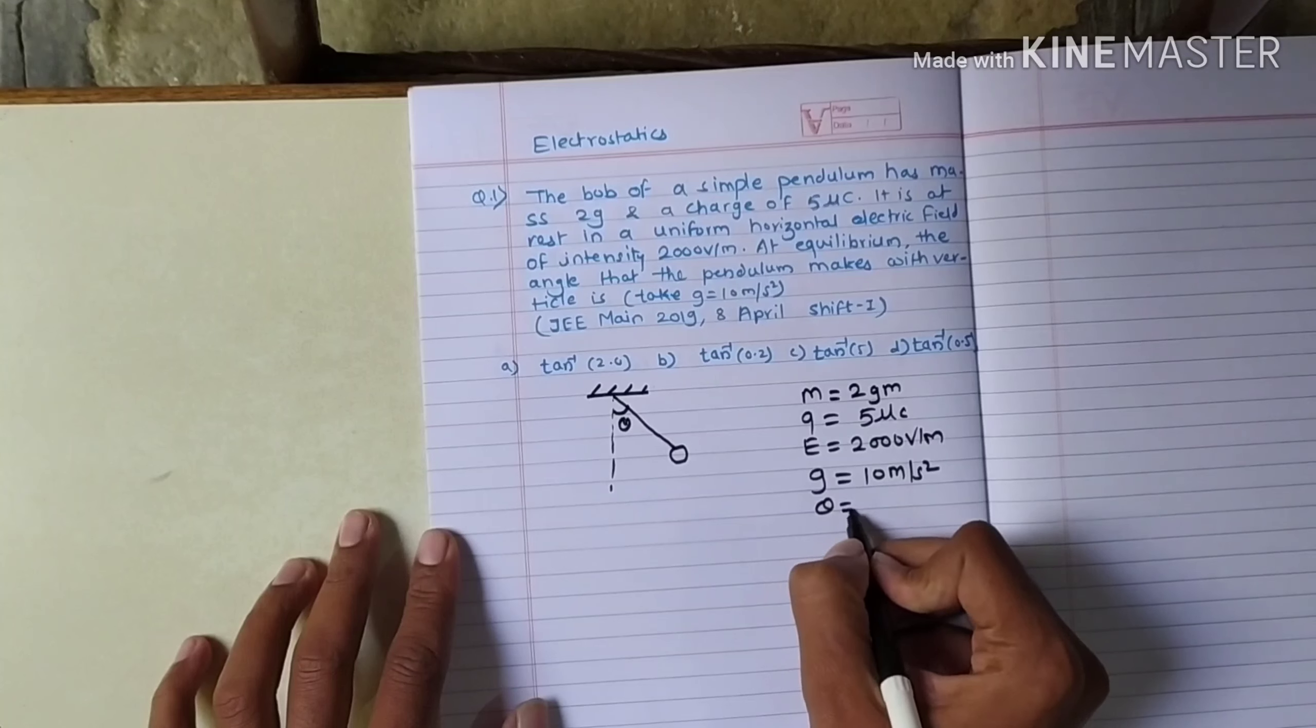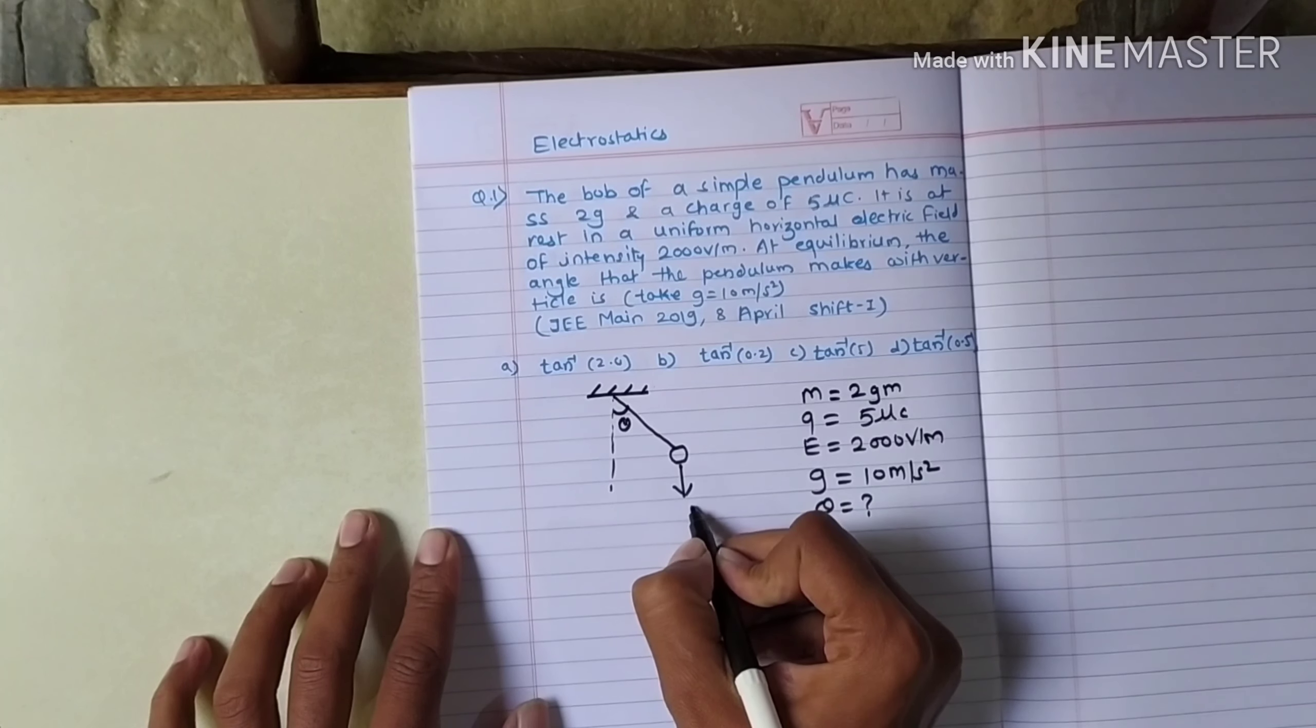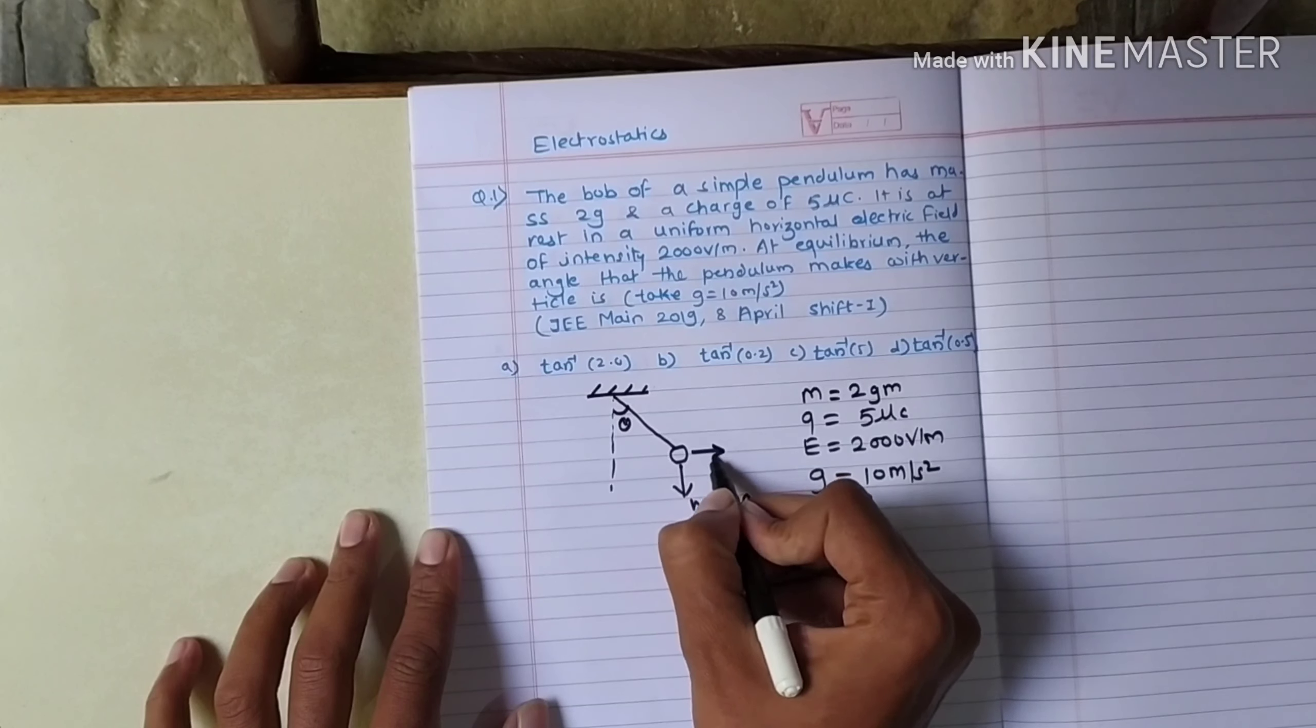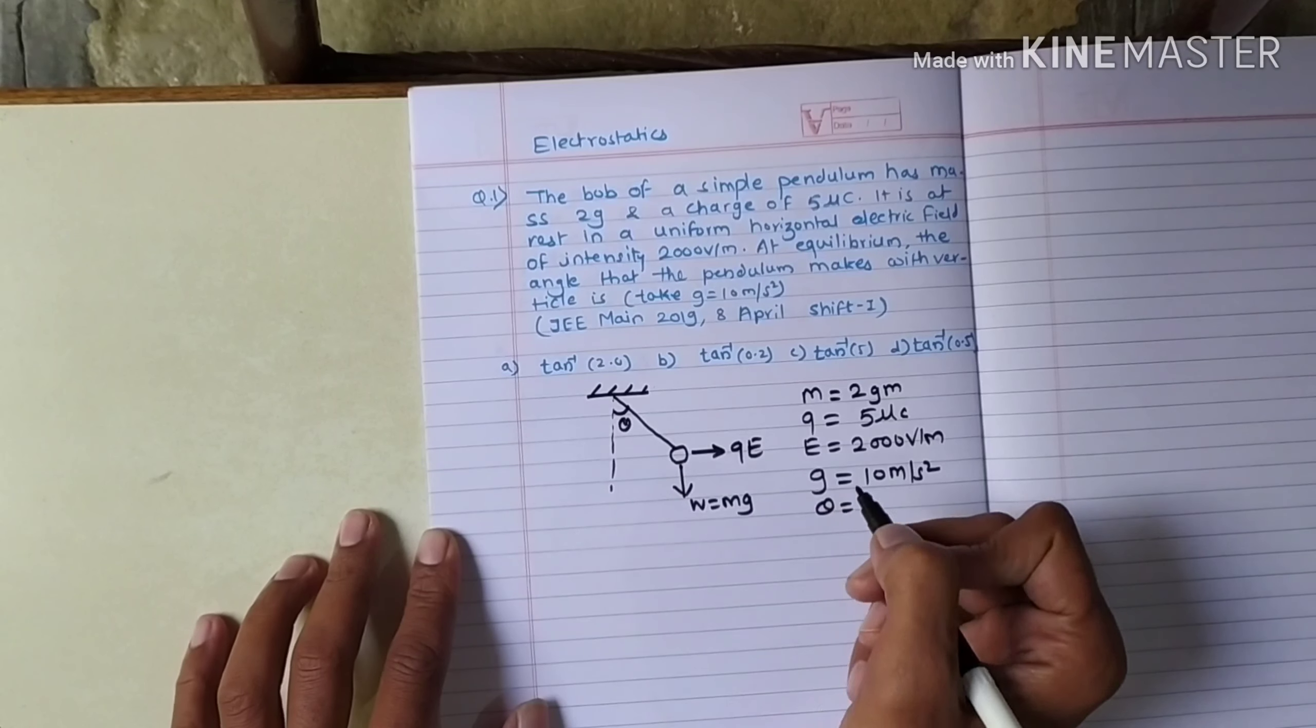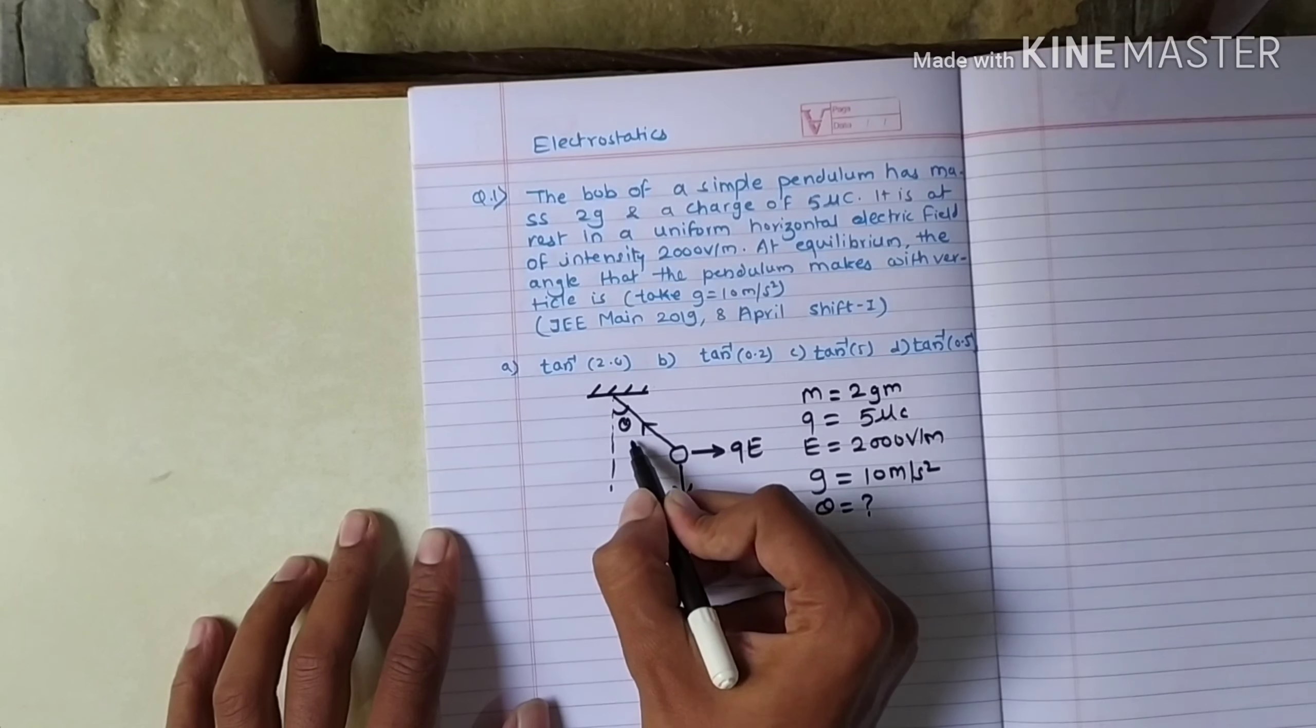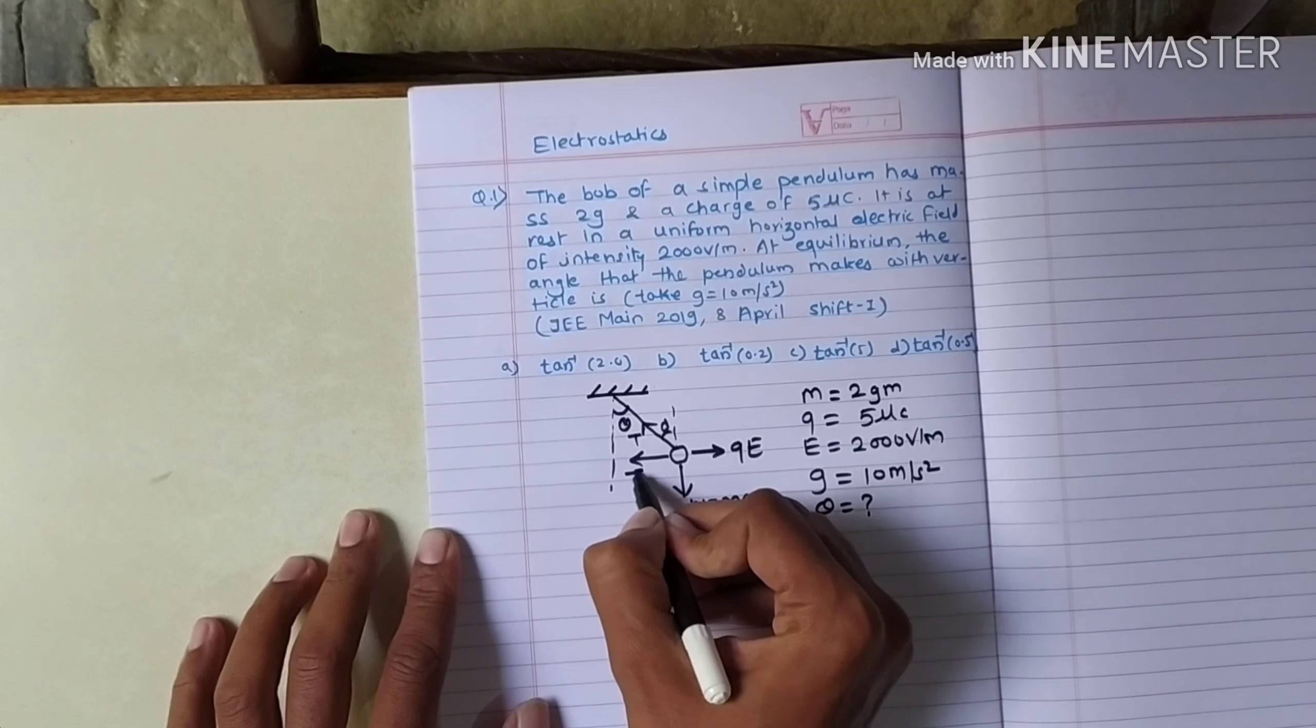This is the pendulum bob. This is the free body diagram. There is weight acting vertically downward equal to mg. The electric field is acting in a horizontal direction, so there will be a force q into e. This string will develop a tension T which can be resolved into two components. Suppose this angle is theta. One will be T sin theta in this direction, and the other component is T cos theta in this direction.